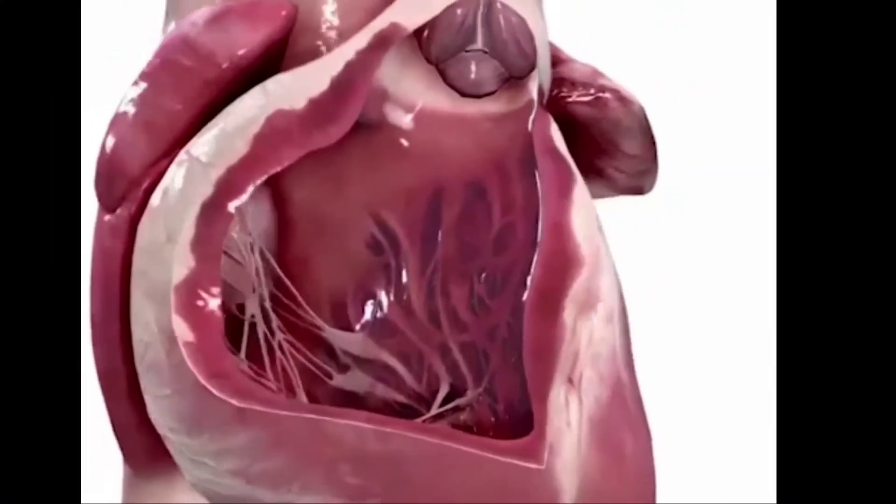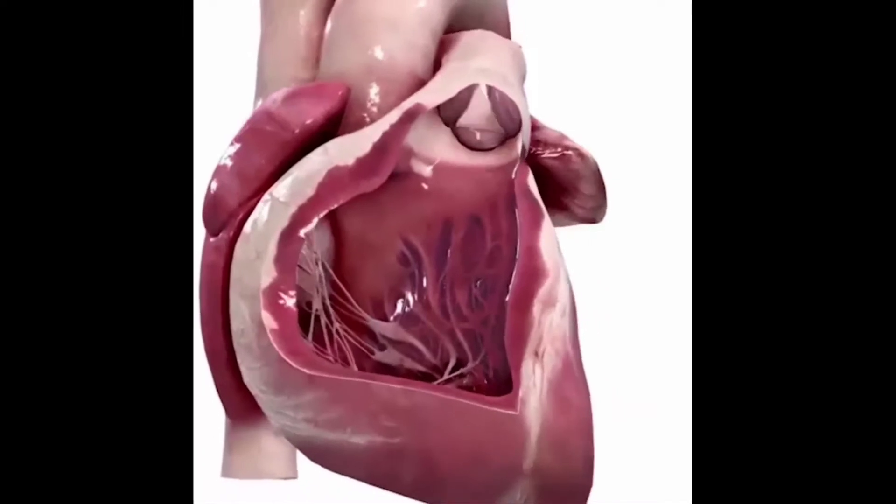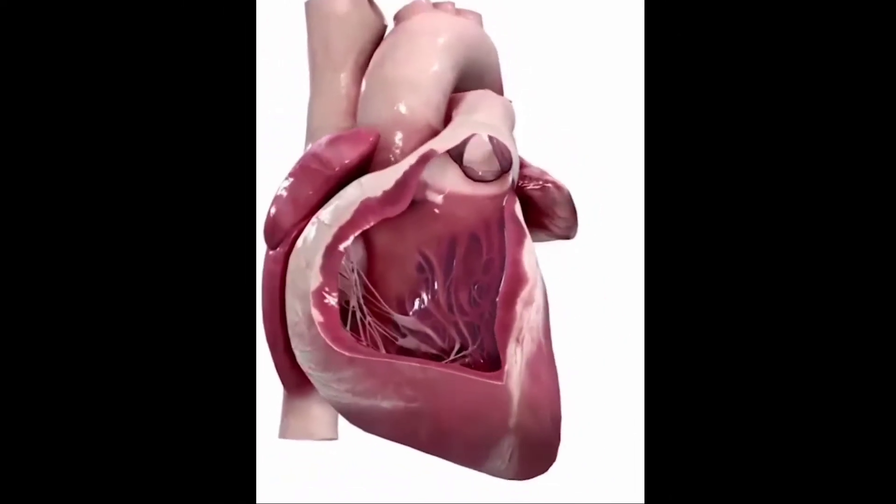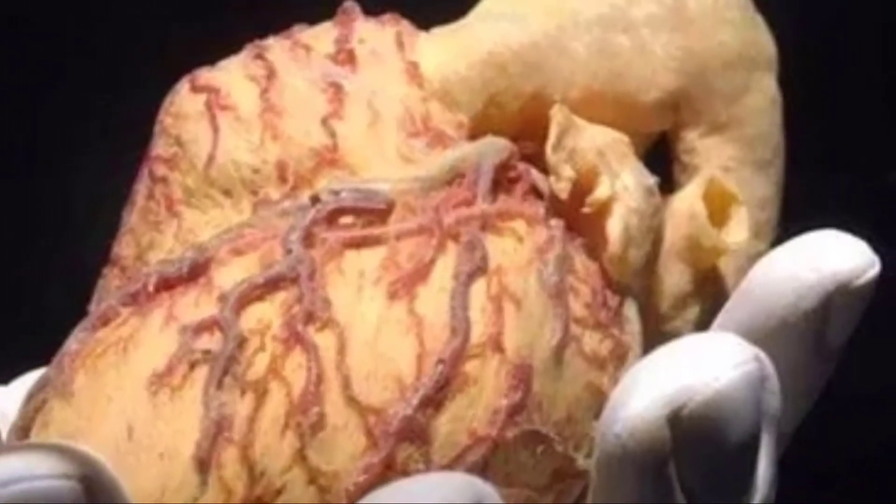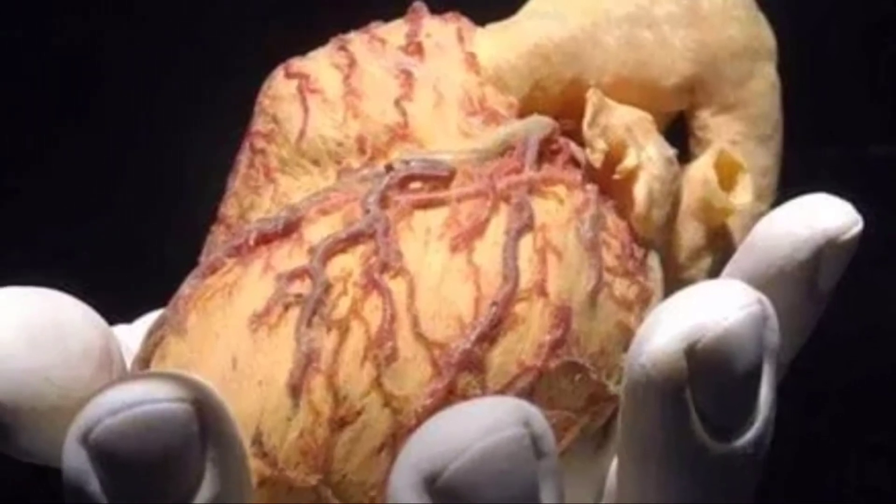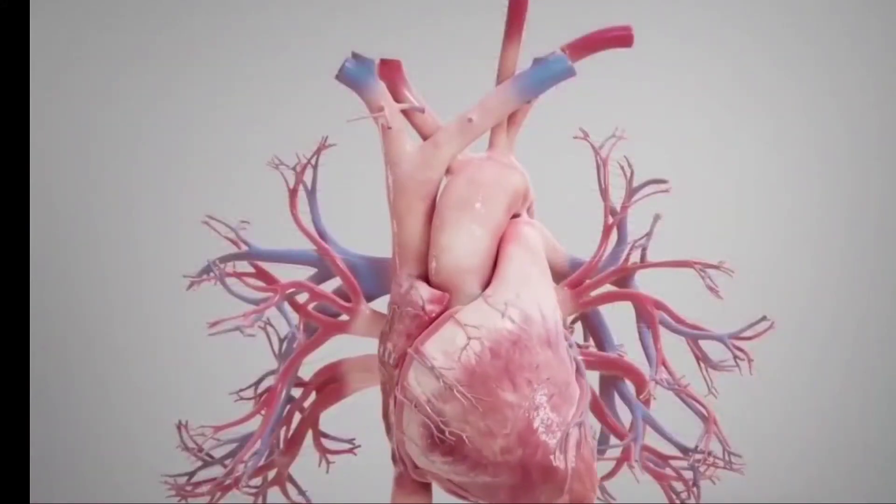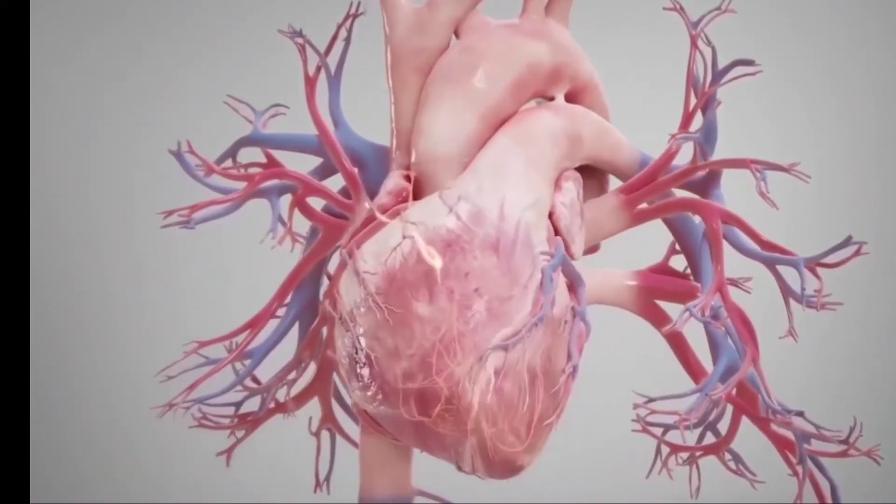The heart weighs around 7 to 15 ounces (200 to 425 grams) and is just a little larger than the size of your fist. By the end of a long life, a person's heart may have beat—expanded and contracted—more than 3.5 billion times.